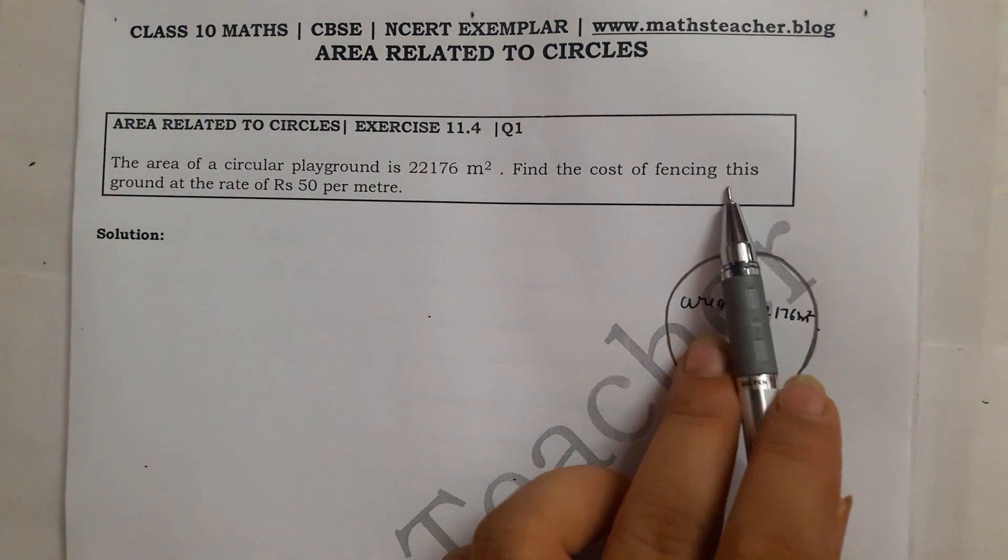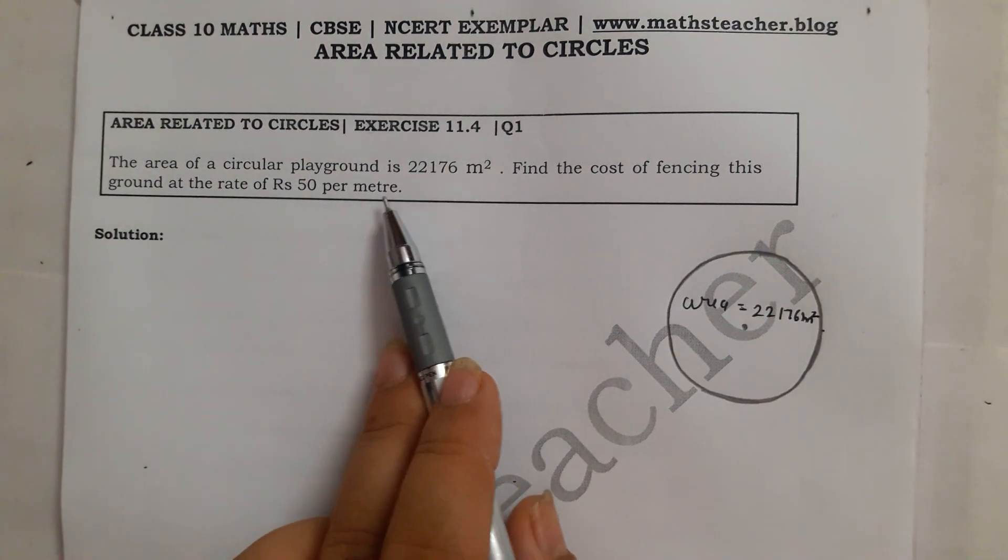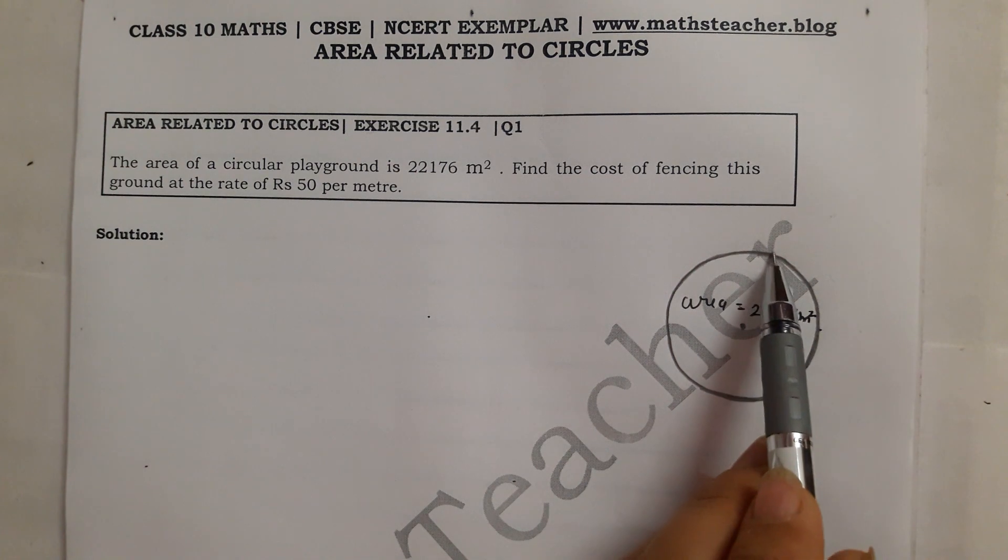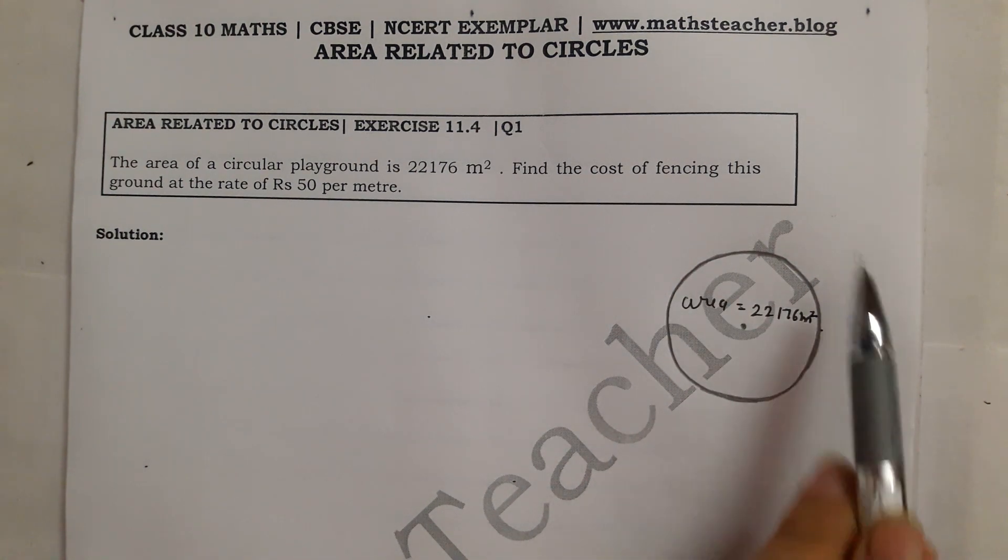Find the cost of fencing this ground at the rate of Rs.50 per meter. Fencing means what are you doing on the border - fencing like a wire.